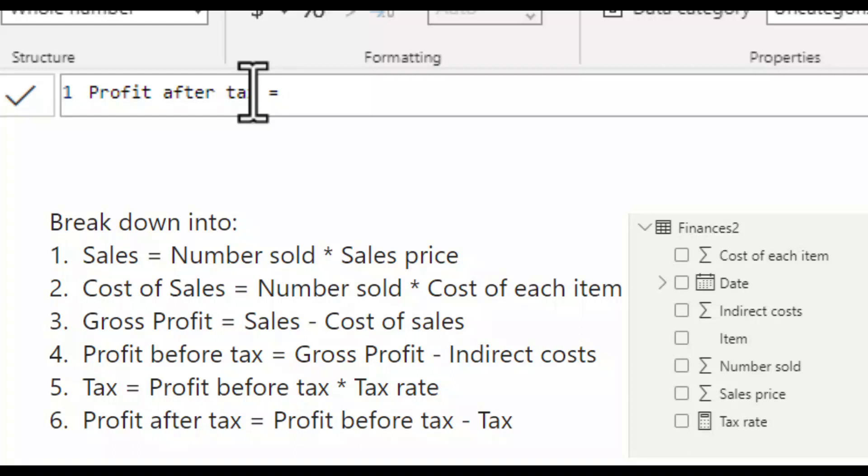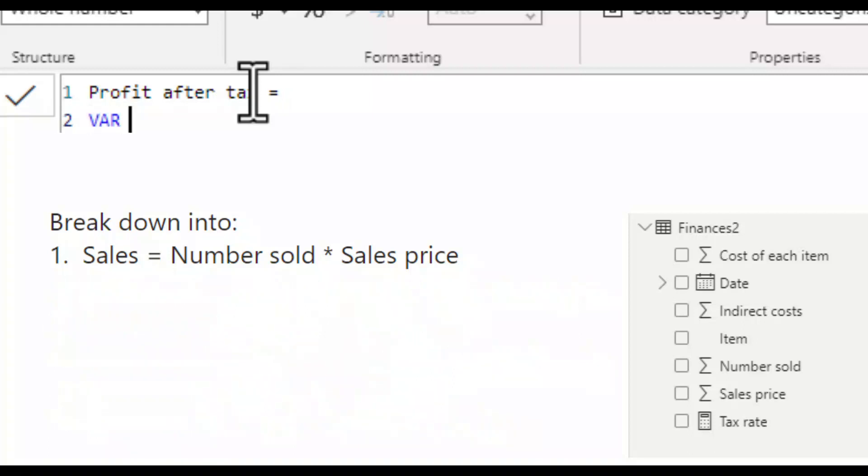I type var. In DAX, var stands for variable. Then I need to give the variable a name. And in keeping with the name of the steps, I will call it sales. And say it equals. Then I select the name of the field I would like in my data set, which is number sold. So in finances two, I select number sold. Then I multiply it by. Then again, I am selecting a field in my finances two, which is the sales price.